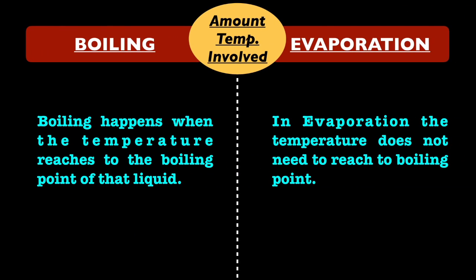The next difference is based upon the average temperature involved. For boiling, the temperature should reach the boiling point of the liquid. On the other hand, for evaporation to take place, the temperature does not need to reach the boiling point — it can happen at any point below its boiling point.